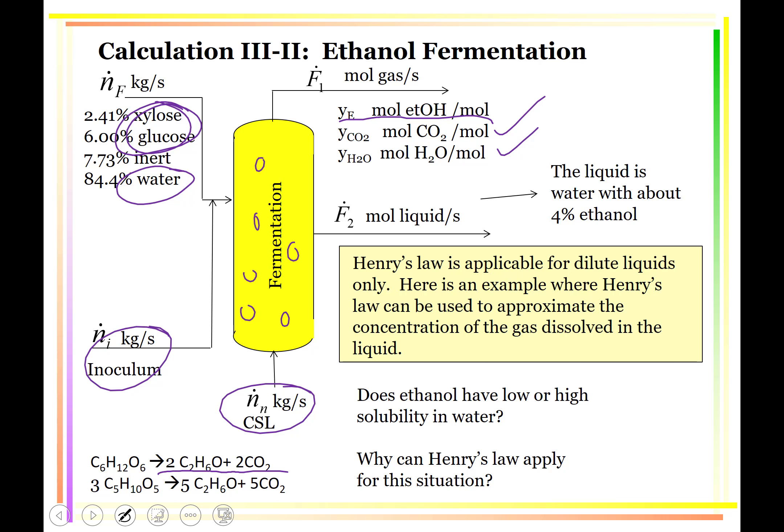Both of these sugars, xylose and glucose, can be used to produce CO2. So we take out a liquid when we cool this. The liquid has about 4% ethanol.